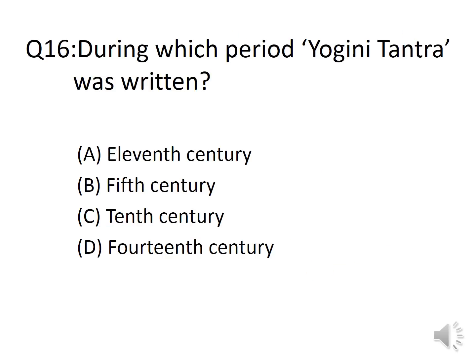Question 16: During which period was Yogini Tantra written? Options: A. 11th century, B. 5th century, C. 10th century, D. 14th century. The correct answer is actually the 16th century, but since 16th century is not given as an option, the closest one given is Option D, 14th century.